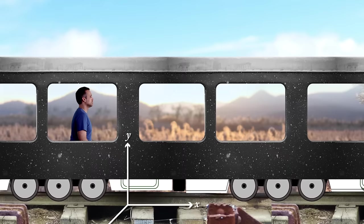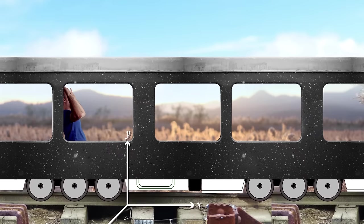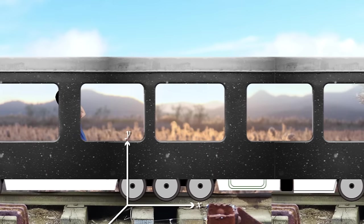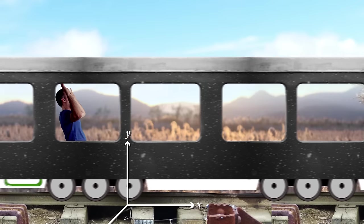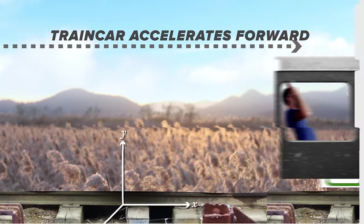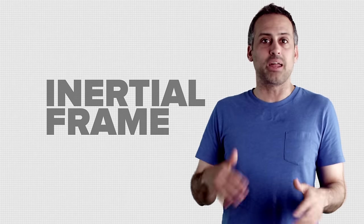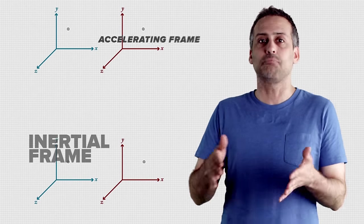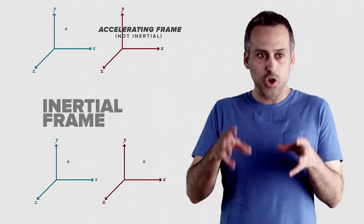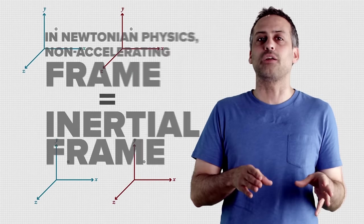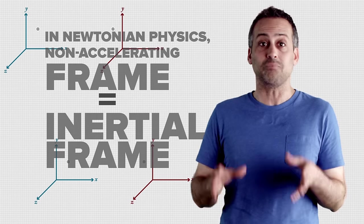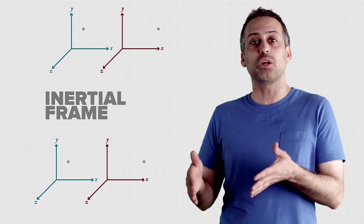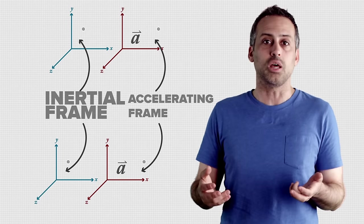In contrast, a frame attached to the tracks pretty much is inertial — at least if you disregard Earth's rotation — because relative to that frame, you don't accelerate at all. Instead, the train car accelerates forward underneath you. Any frame that accelerates relative to an inertial frame will not be inertial. Inertial frame and non-accelerating frame are synonyms in Newtonian physics. You can think of inertial frames as the standard against which you measure true acceleration, and from their perspective, motion obeys a simple rule: F equals ma.